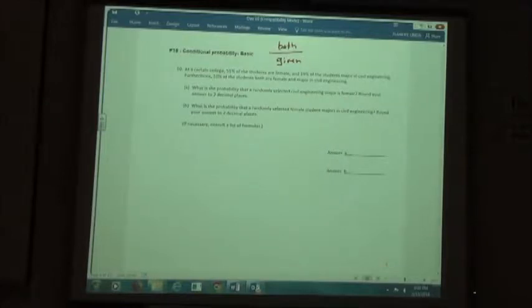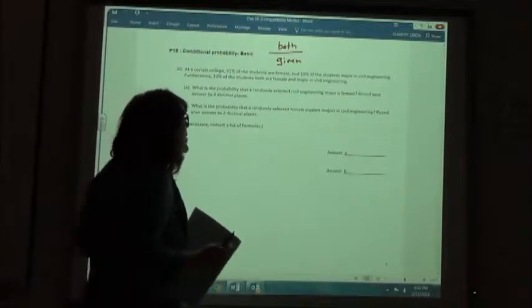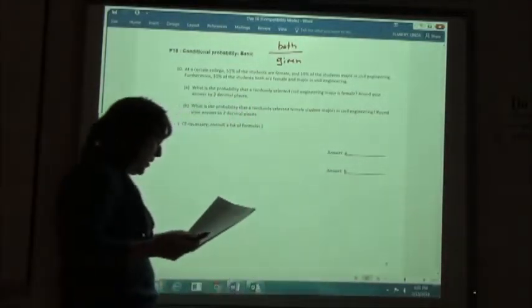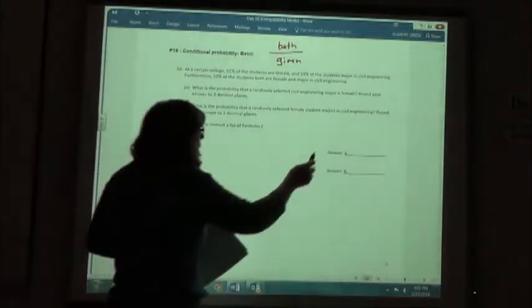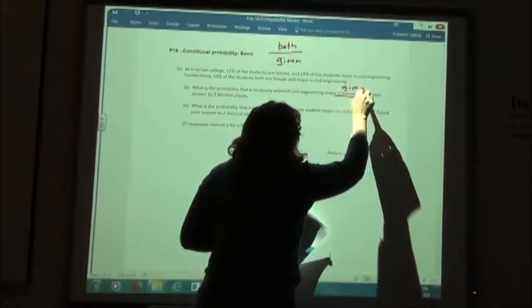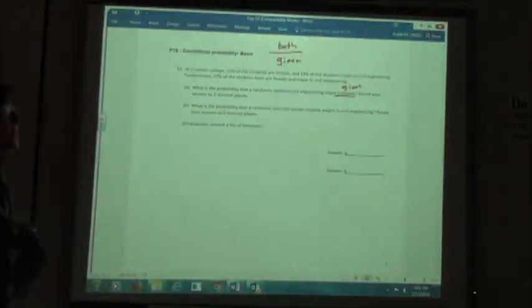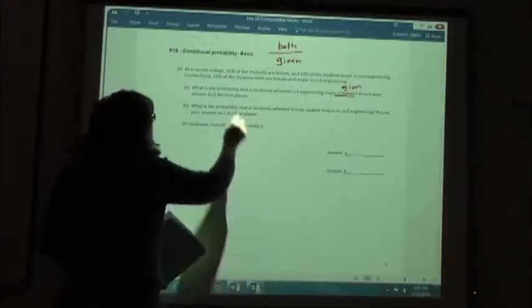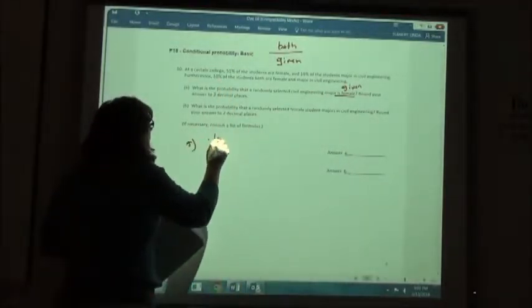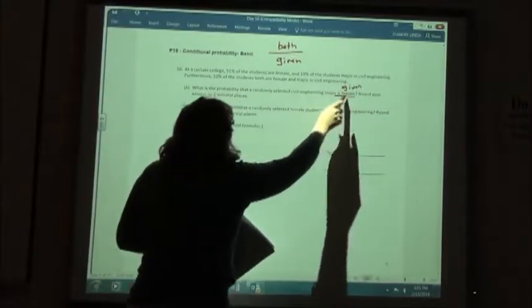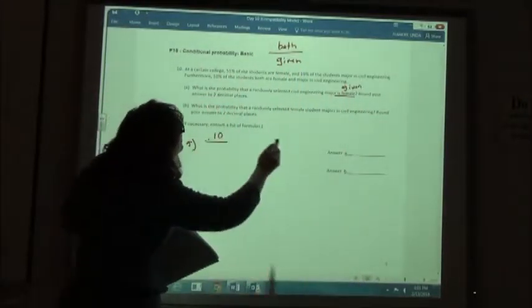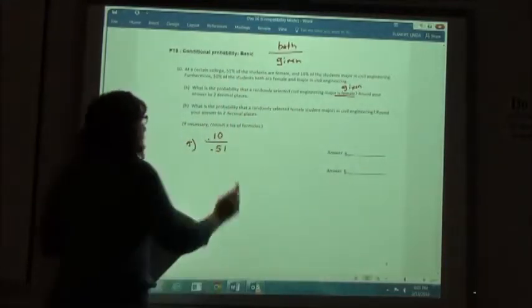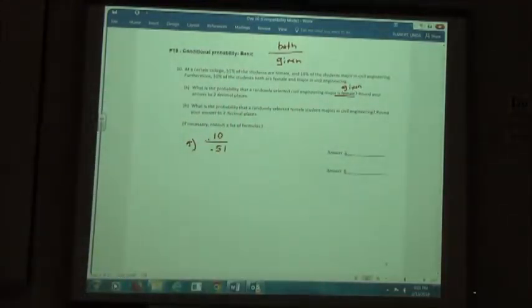For example, if we look at part A, what is the probability that a randomly selected civil engineering major is female? So in this case we know that this is the given thing - we know that they are female, and we want to find what percent are civil engineering majors. So we're going to take the probability of both, which is 10%, and divide it by the probability of the females, which was 51%. These ones we are going to round your answer to two decimal places.